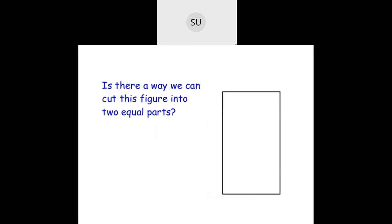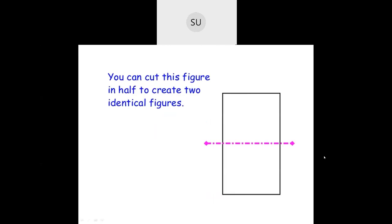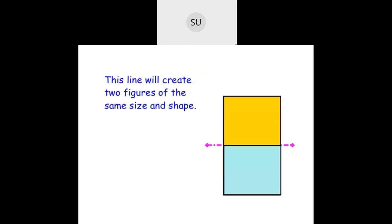Now take this rectangle for example. Is there any way you can cut this figure into two equal parts? You will cut it half across the figure — you can cut the figure in half to create two identical figures. When you cut it like this in between, you have two squares. This is one square and this is another square. They are exactly identical to each other. This line creates two figures of the same size and shape, so both these squares are of the same size and shape.